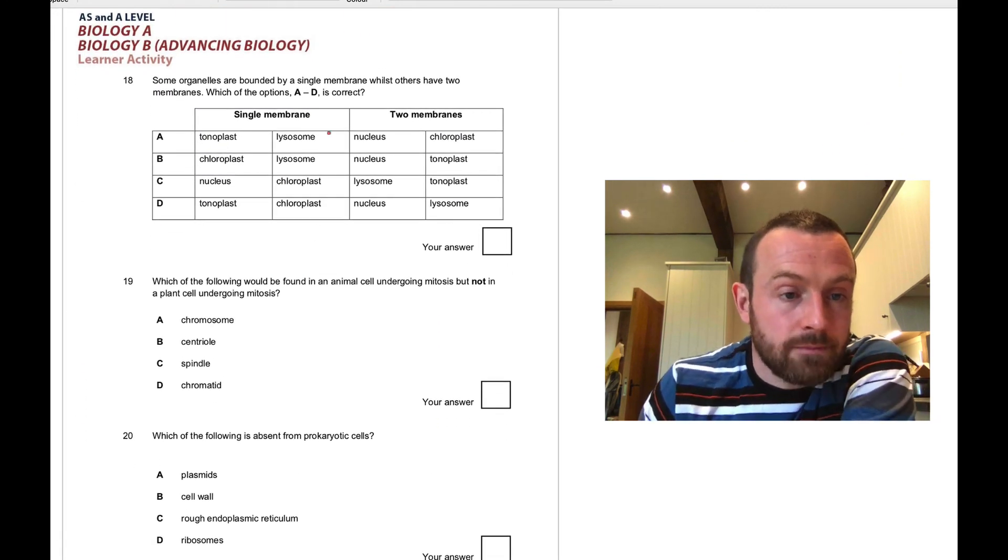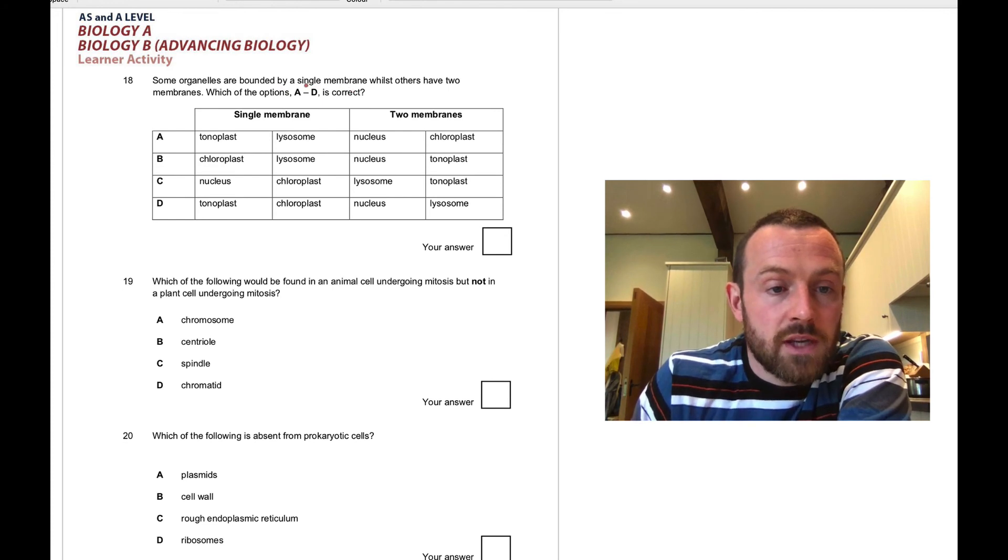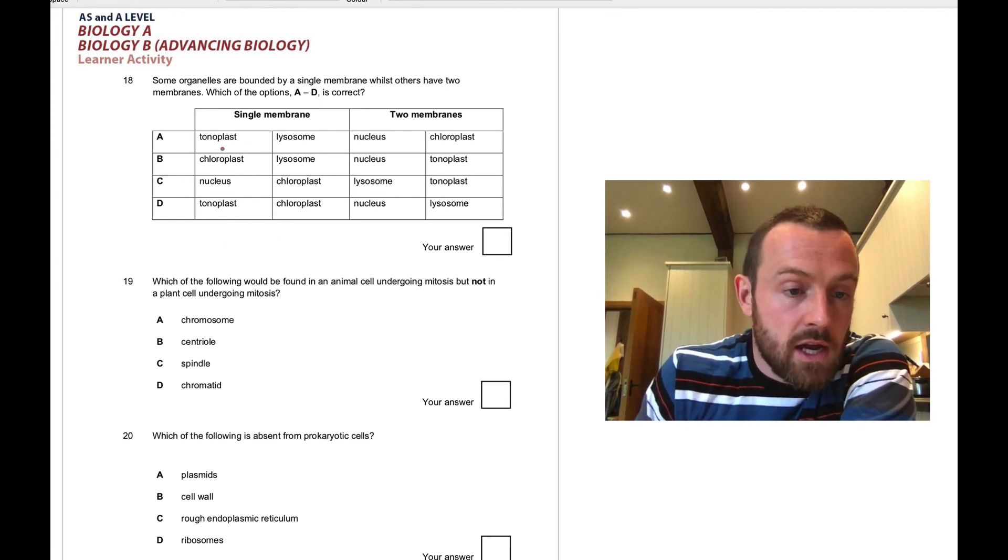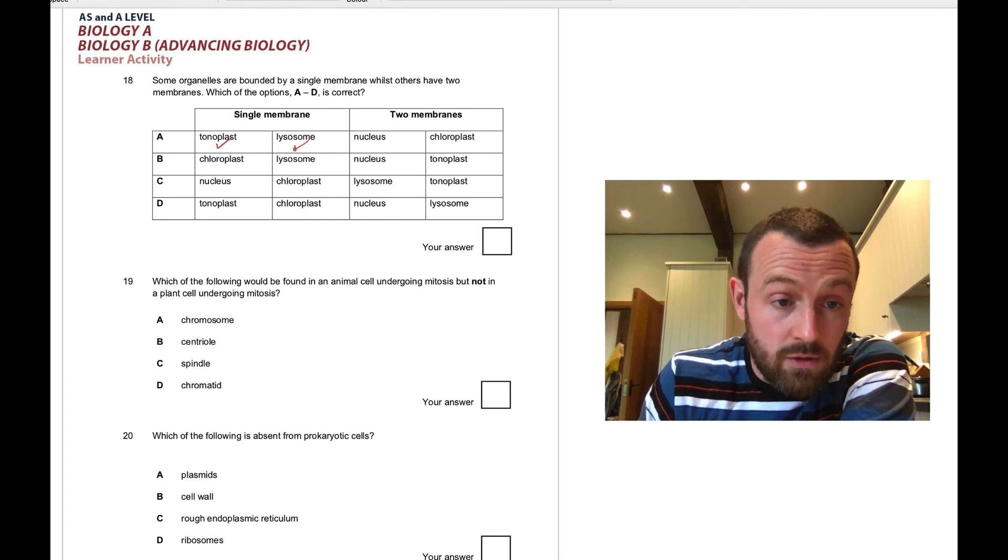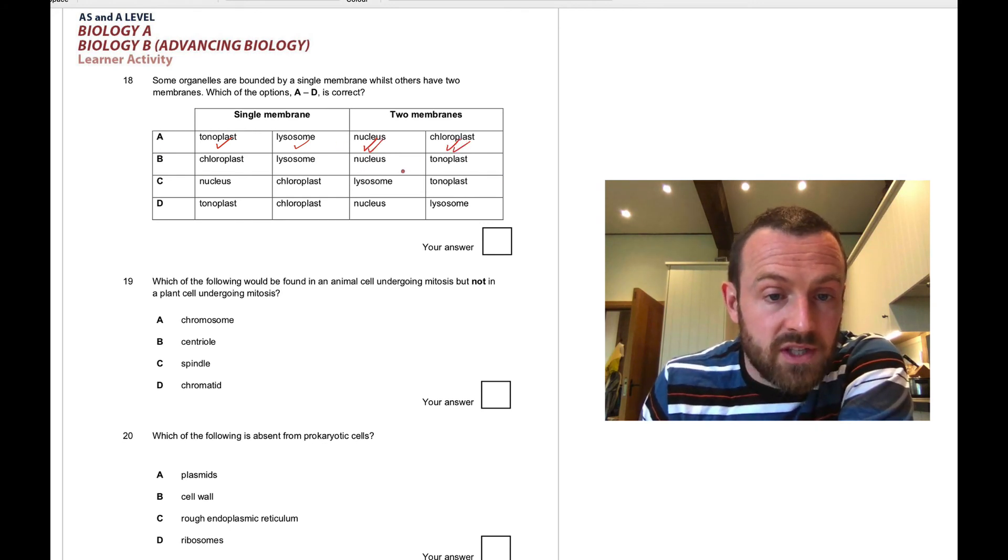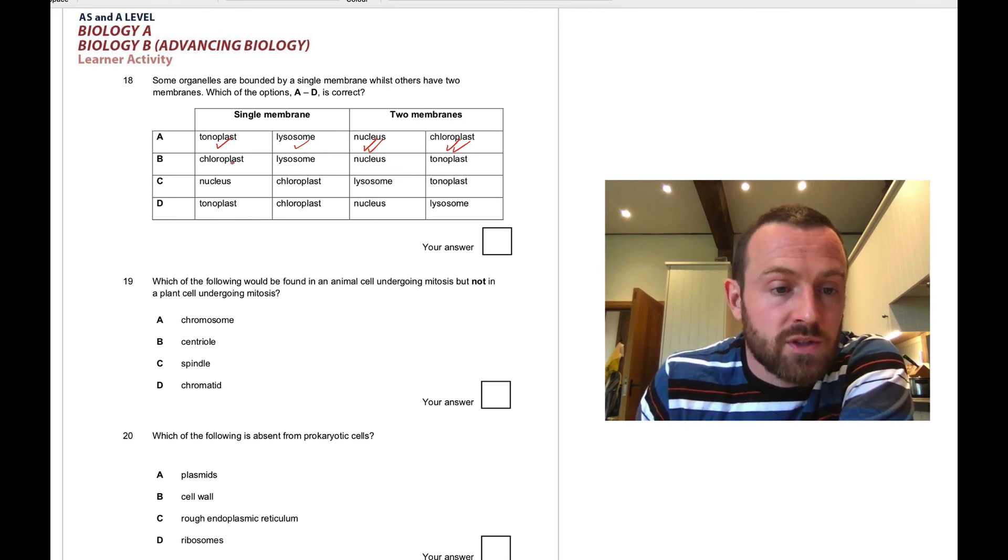Question eighteen: single membrane versus double. Single membrane: tonoplast, yes. Lysosome, yes, single membrane. Two membranes: nucleus, yes, it's got two. Chloroplast, yes, it's got two. So straight away, it's A. If you work through the other ones, you'd see there'd be some mistakes here. The answer is A.